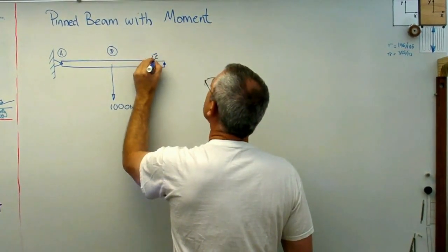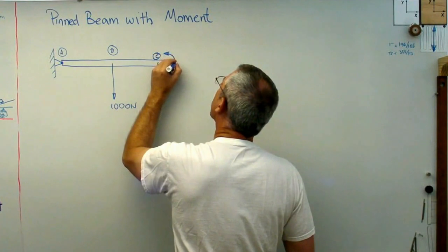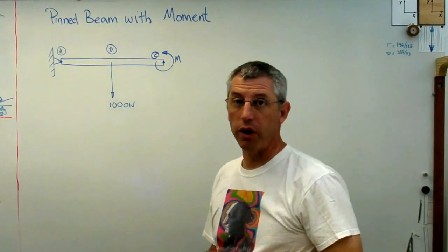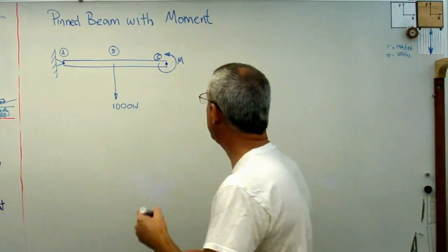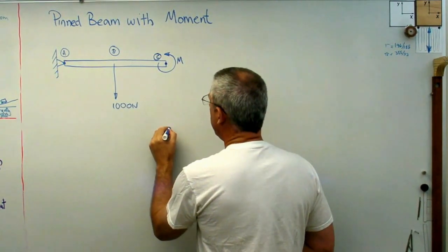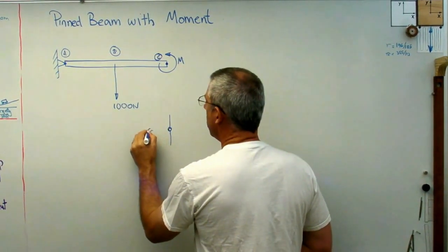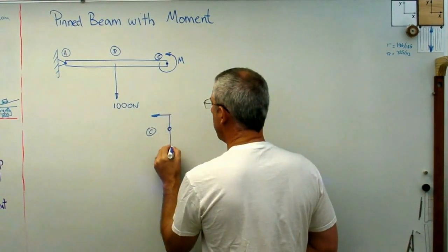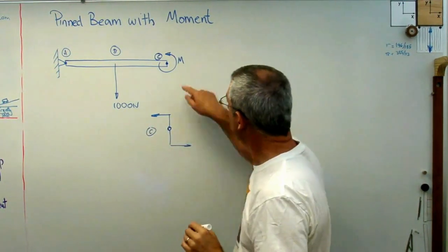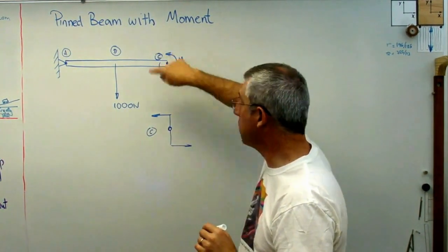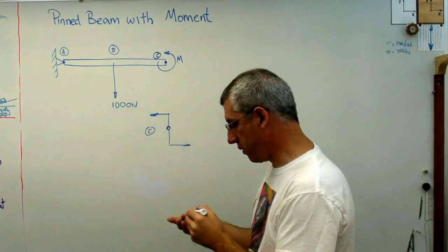What if at point C here we have a big moment? A moment but no force. That would be like if I had at point C here a big force that way and a big force that way that gave me a moment. The forces cancel out, but there's a net moment. That's what that is.